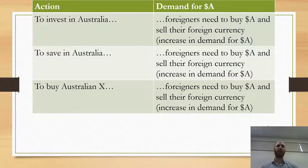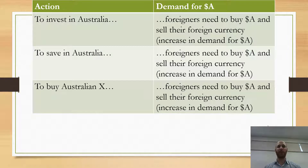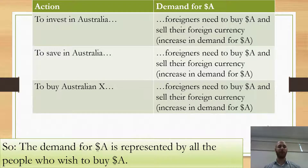If I want to invest in Australia, I need to buy Australian dollars and sell my foreign currency, which will increase demand for Australian dollars. If I want to save in Australia as a foreigner, I would need to buy Australian dollars and sell my foreign currency, which would increase the demand for the Australian dollar. If I wanted to buy Australia's exports, foreigners would need to buy Australian dollars and sell their foreign currency, which would increase demand for Australian dollars.